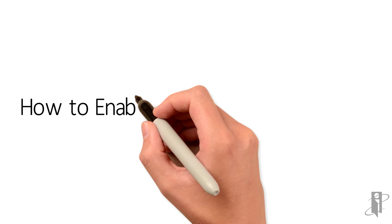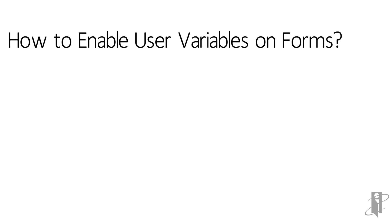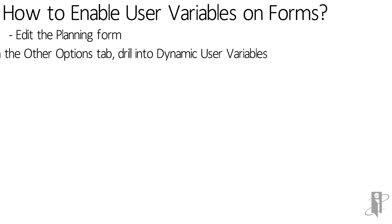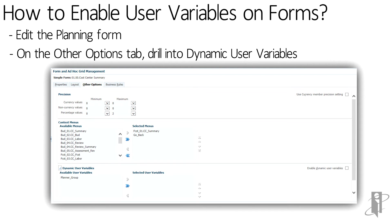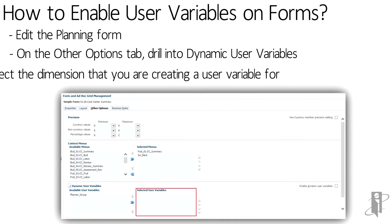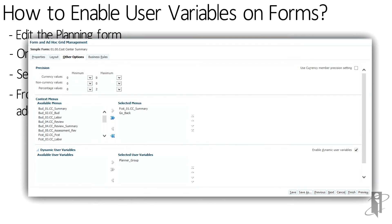How to enable user variables on forms. You've just created your first user variable, but now you want to actually use it in your forms. Open the form that you'd like to add the user variable to. Select Edit and select the Other Options tab. Scroll down until you see Dynamic User Variables, where you will drill into this section and you'll see Available User Variables and Selected User Variables. On the left-hand side under the Available User Variables box, you should see the variable that you just created, and you'll bring that over to the Selected User Variables box by selecting that variable and clicking the right arrow.